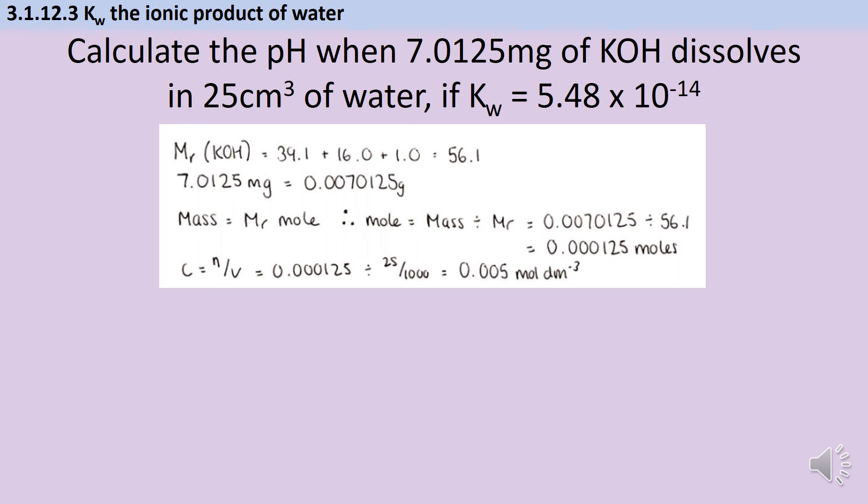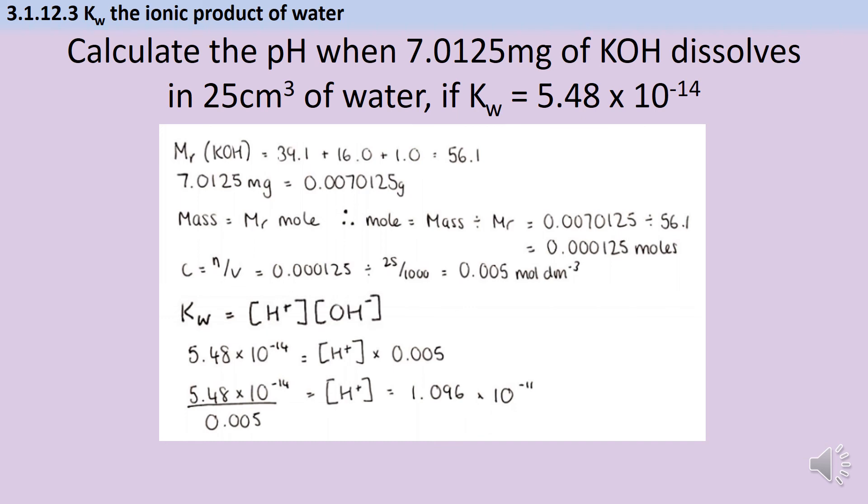This gives me a concentration of hydroxide ions of 0.005. Remember, KW is the concentration of hydrogen ions multiplied by the concentration of hydroxide ions. So if I take KW and divide it by the concentration of hydroxide ions, then I'm given the concentration of hydrogen ions.